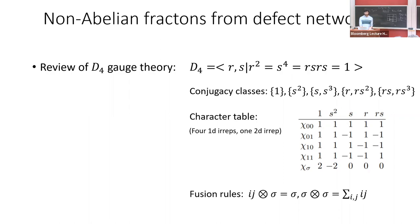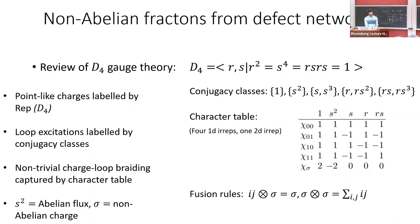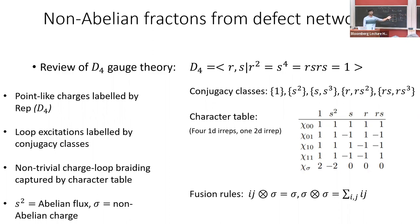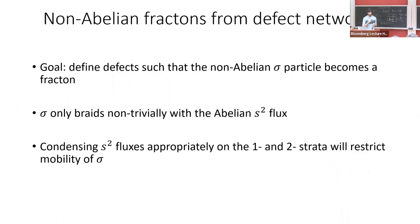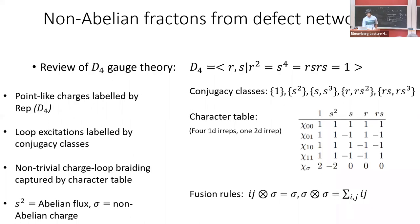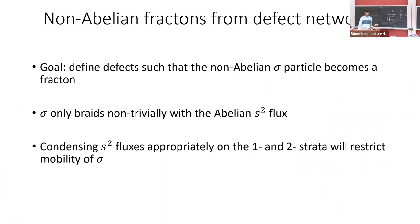I want to build a non-Abelian fracton model starting from D4 gauge theory in 3D. D4 has five conjugacy classes, five irreps, and the character table is shown. The point-like charges are labeled by the irreps of D4, and the loop-like excitations are labeled by the conjugacy classes. The non-trivial braiding between the charge and the loop is given by the character table. In particular, the sigma charge and the S-squared flux braid non-trivially, and I want to use this to build a model where the sigma charges become fractons.